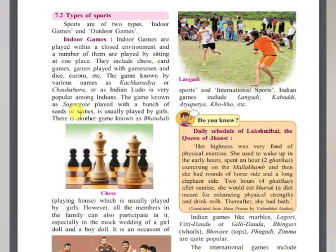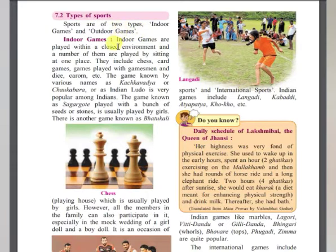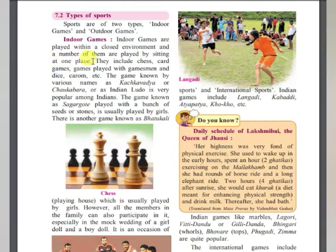Let us now discuss some types of sports. Sports are basically of two types — indoor games and outdoor games. Outdoor games are played outside the house, while indoor games are played within a closed environment, and a number of them are played sitting at one place.